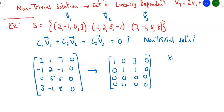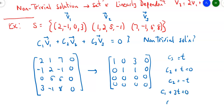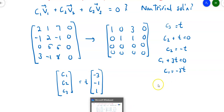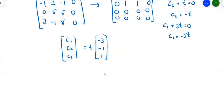That means we're going to need to set up a parameter. Let's let C₃ be t. From the second row, C₂ plus t equals zero, so C₂ is negative t. The first row tells me C₁ plus 3t equals zero, so C₁ is negative 3t. That means C₁, C₂, C₃ equals t times the vector (-3, -1, 1). There are many different ways to write these as linear combinations, which means this set is dependent — we came up with non-trivial solutions.